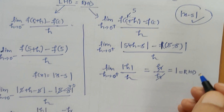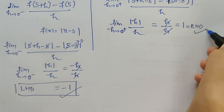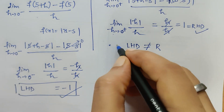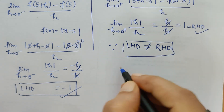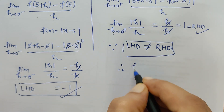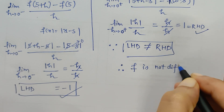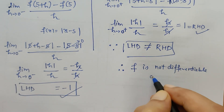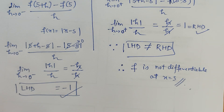We see that the left hand derivative is not equal to the right hand derivative. Therefore, since left hand derivative ≠ right hand derivative, the function is not differentiable at x = 5. I hope the problem is clear to everyone. Thank you and have a nice day.